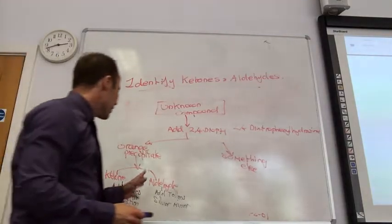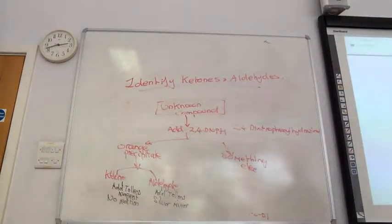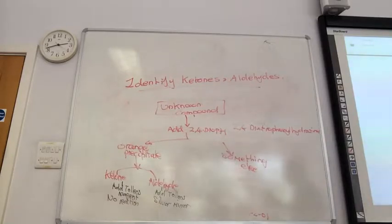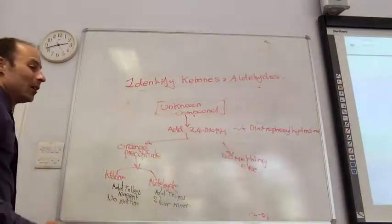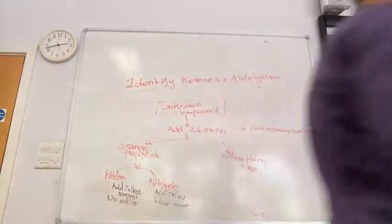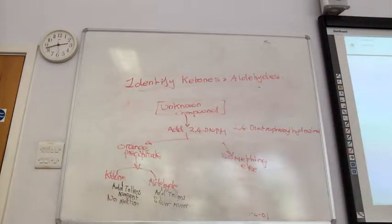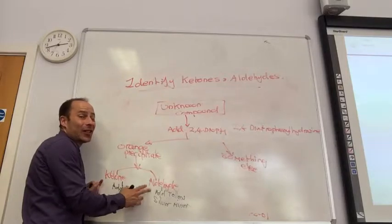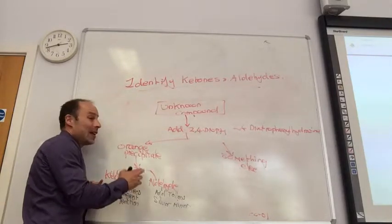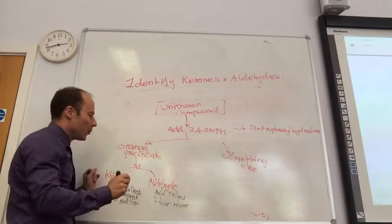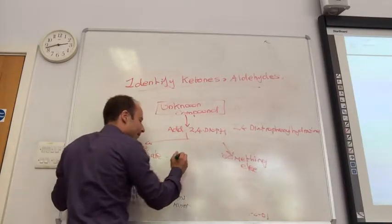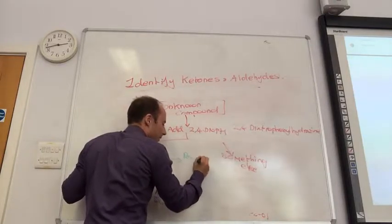Now, let's say I said to you, you've got your orange precipitate. You know it's an aldehyde, I want you to tell me exactly which one it is. What exact ketone or aldehyde have I got? Either I just want to know is it a ketone or aldehyde, you just do this. If I tell you, tell me, name that ketone, which one is it? What you do is you take the orange precipitate and you recrystallise it.